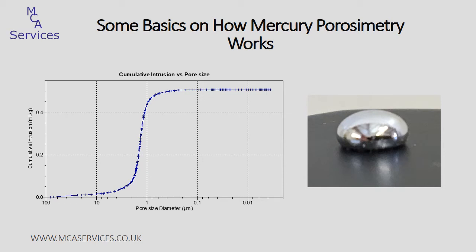The applied pressure required to intrude mercury into a pore is inversely proportional to the size of the pore. By increasing the applied pressure in appropriate increments, we can measure the volume of mercury intruded into a sample at a range of pressures. And from that, we can generate an intrusion curve of pore size against intrusion pressure.